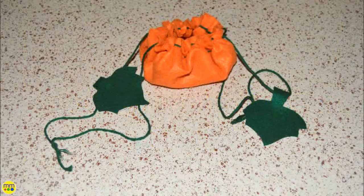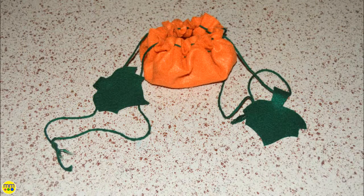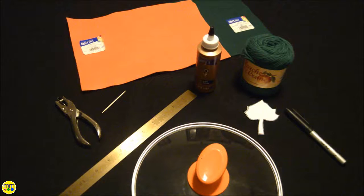Follow along to make these cute snack bags with your little ones. You need orange and green felt, glue, a hole punch, leaf template, sharpie, ruler, yarn, and a pot top.